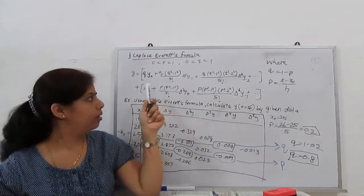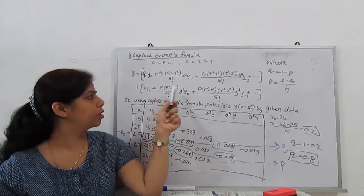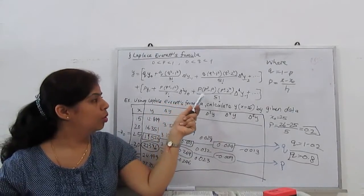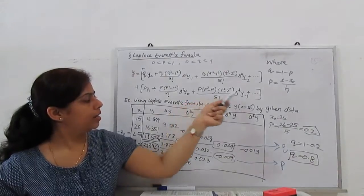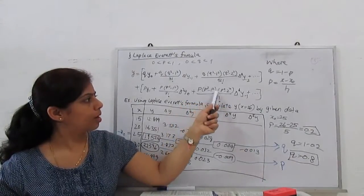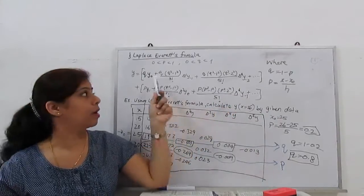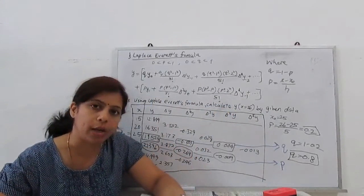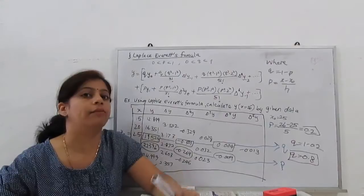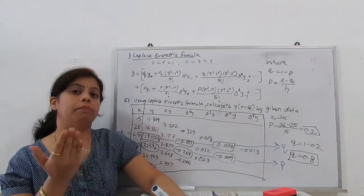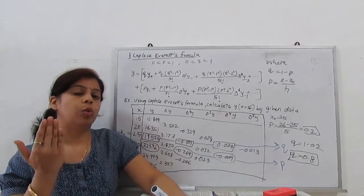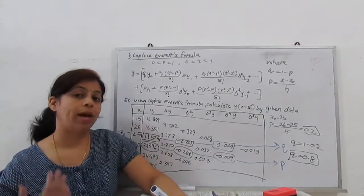These all are even. Similarly for P: P Y1, P(P² - 1) factorial 3, del² Y0, this is del⁴ Y₋₁ and so on. P(P² - 1)(P² - 2) upon factorial 5. Always factorial is in odd order: factorial 3, factorial 5, factorial 7, and the terms go on. P, P² - 1², P² - 2², P² - 3², and so on.